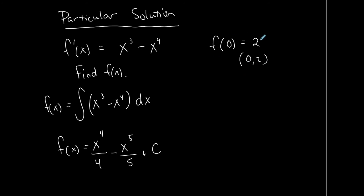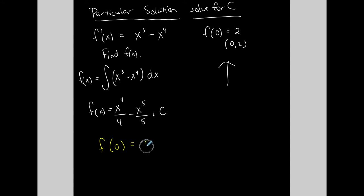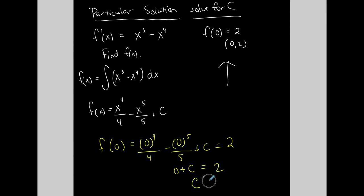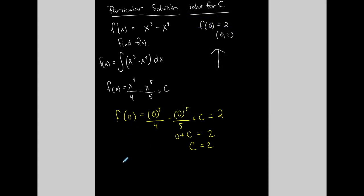Now I have to satisfy this particular case — I want the particular solution, so this function must satisfy the point (0, 2). I'm solving for that particular constant of integration c. Plugging in: when x is 0, 0 to the fourth over 4 minus 0 to the fifth over 5 plus c should equal 2. This is all 0, so 0 plus c equals 2, meaning c equals 2. So f of x equals x to the fourth over 4 minus x to the fifth over 5 plus 2.